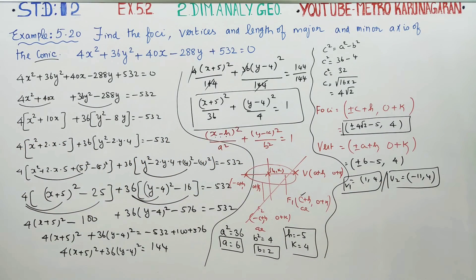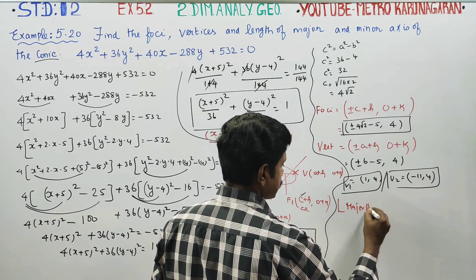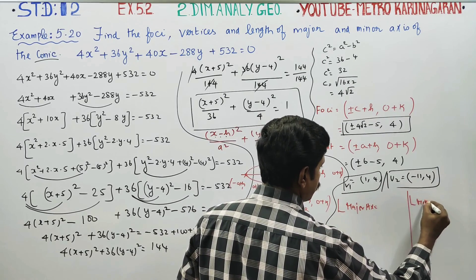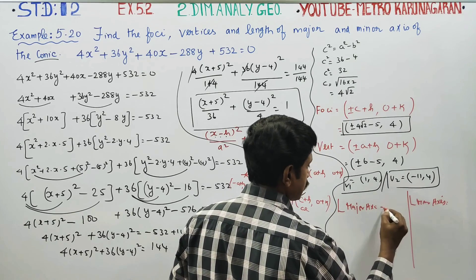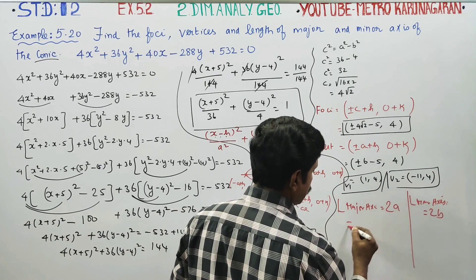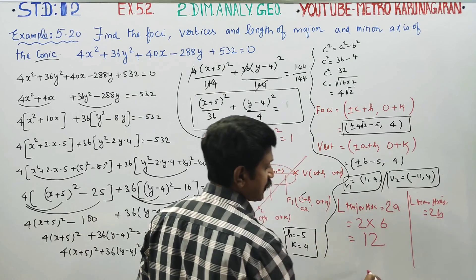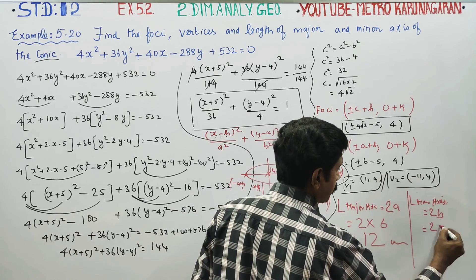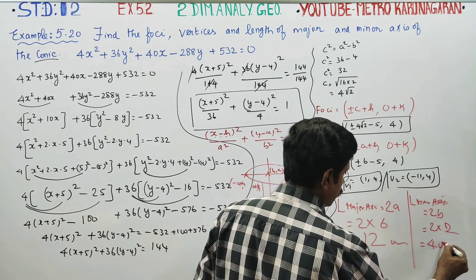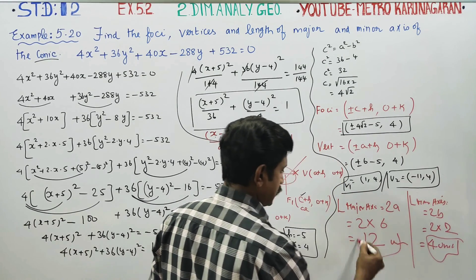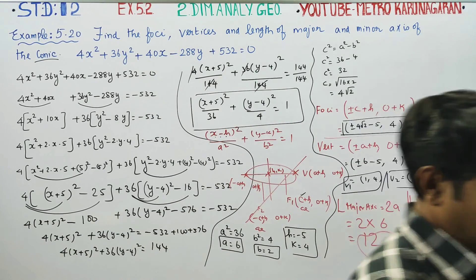Length of the major axis = 2a = 2 × 6 = 12 units. Length of the minor axis = 2b = 2 × 2 = 4 units. Foci and vertices are ready. Thank you.